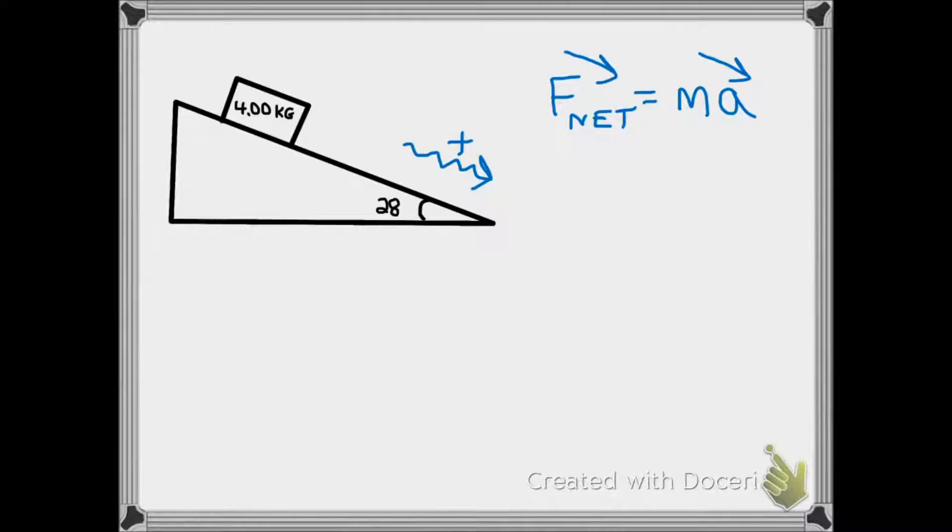But when I initially draw my force diagram, I just see the 40 newton weight of the box going towards the center of the earth, and the normal force pushing up at an angle perpendicular to the surface, which for clarity I'm going to show pulling up on the box.